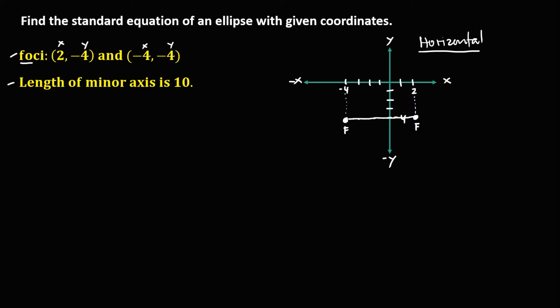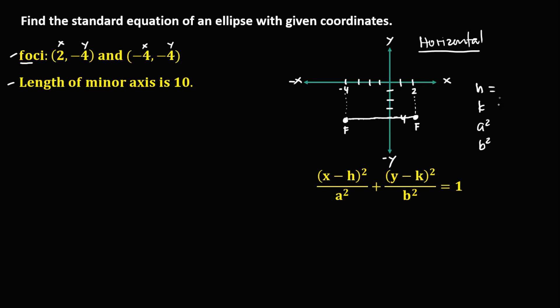Since it is a horizontal ellipse, we use the standard equation formula for a horizontal ellipse. We need to find the values of h, k, a squared, and b squared. To find h and k — the center of the ellipse — we use the foci coordinates and find the midpoint between them.